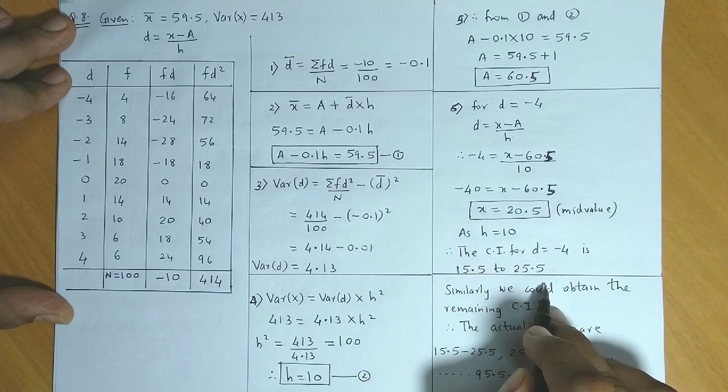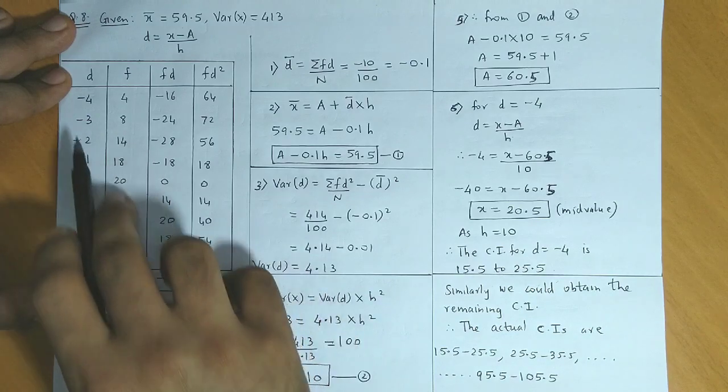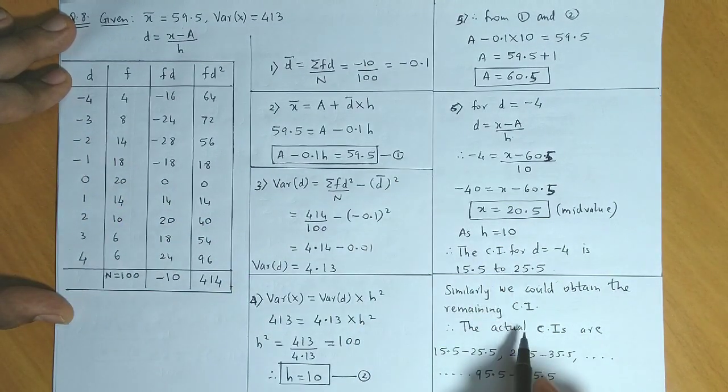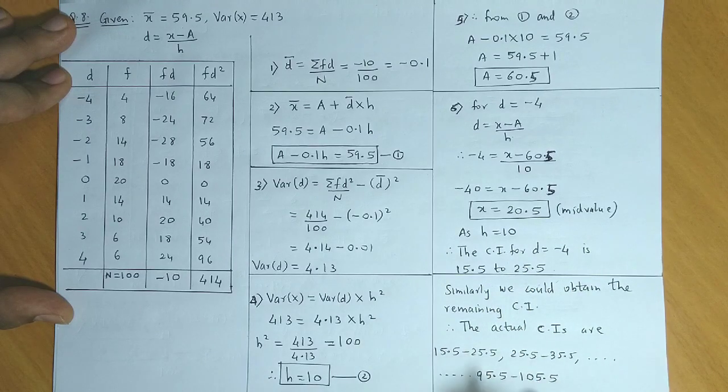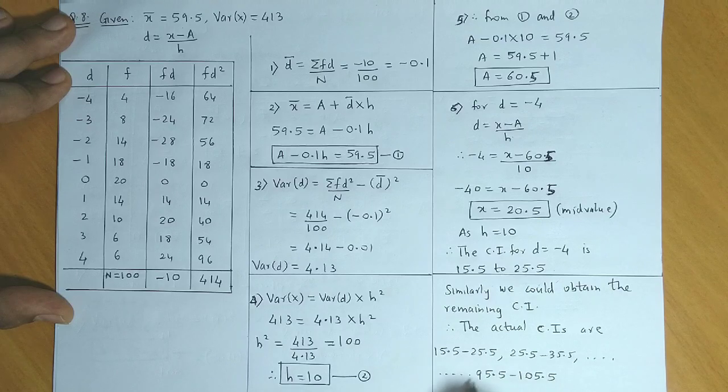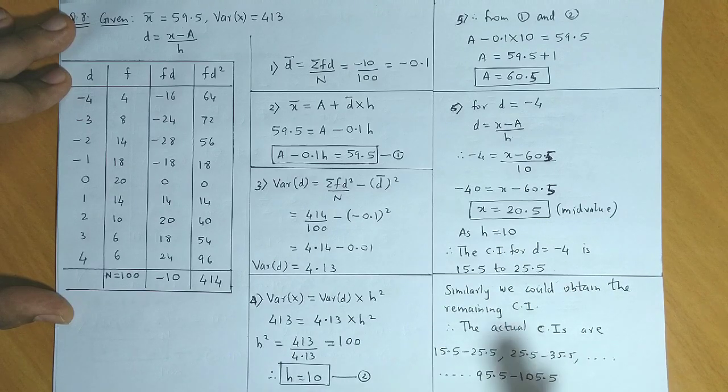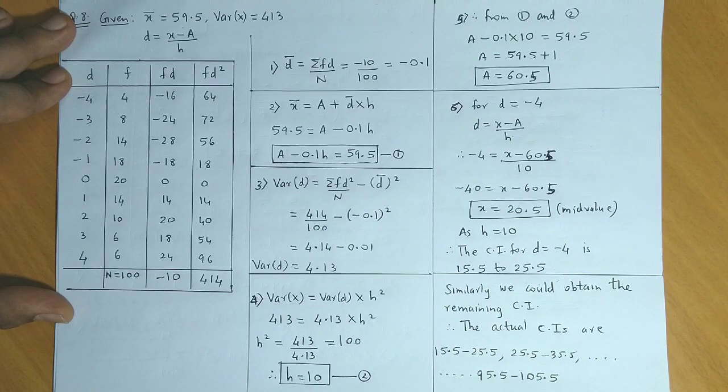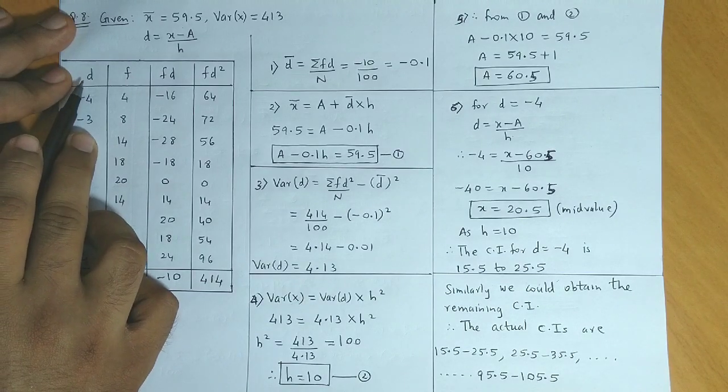This is our first class interval. Similarly, for the remaining values of d, we can obtain the other class intervals. So finally we get the class intervals as 15.5 to 25.5, next is 25.5 to 35.5, and the last class would be 95.5 to 105.5. These are the actual class intervals.